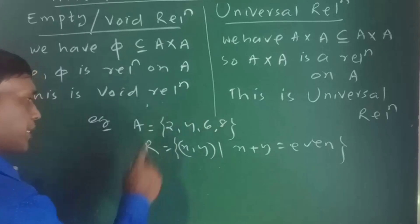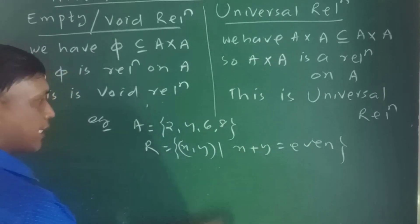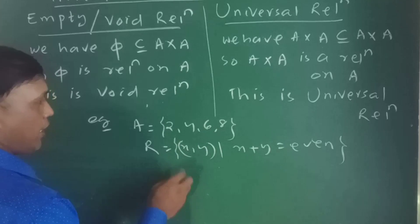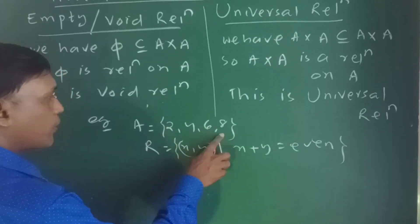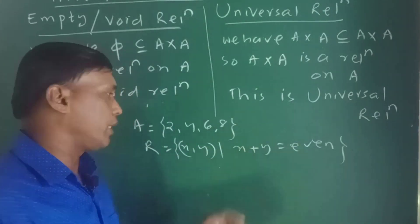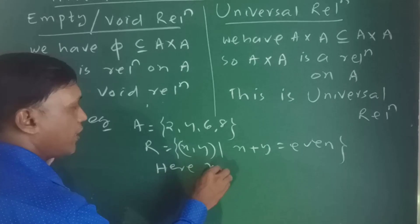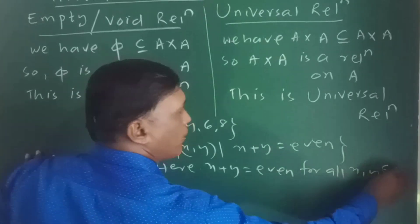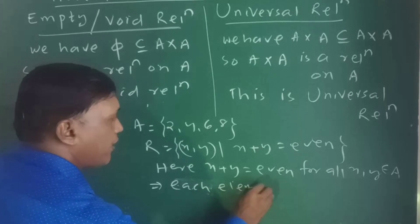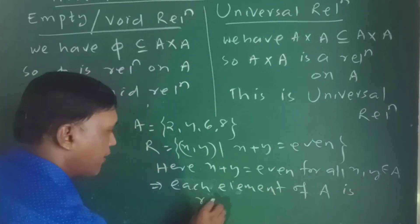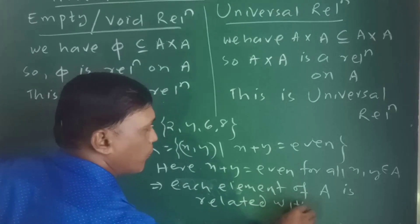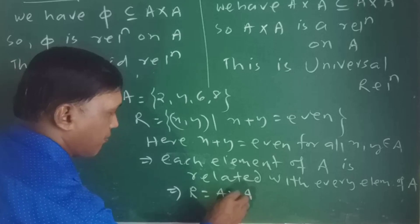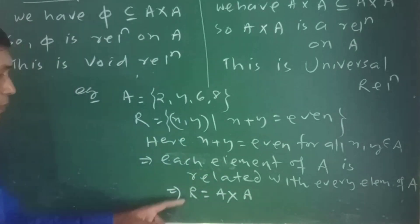Another example: A = {2,4,6,8}. R = {(x,y) | x + y is even, x,y ∈ A}. All numbers in A are even, so the sum of any two elements is always even. Thus x + y is even for all x,y ∈ A, meaning every element of A is related with every element of A. Hence R = A×A, which is the universal relation.